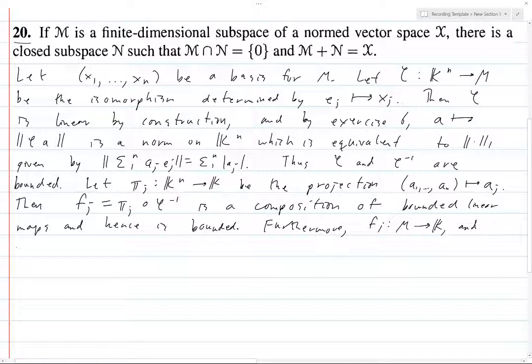And for all x in M, the norm of fⱼ(x) equals the norm of fⱼ composed with φ⁻¹ of x, which is less than or equal to the norm of πⱼ times norm of φ⁻¹ times the norm of x. And the norm of πⱼ is just 1, so this is just norm of φ⁻¹ times x. And we know that this is just some finite constant because φ⁻¹ is a bounded linear function.